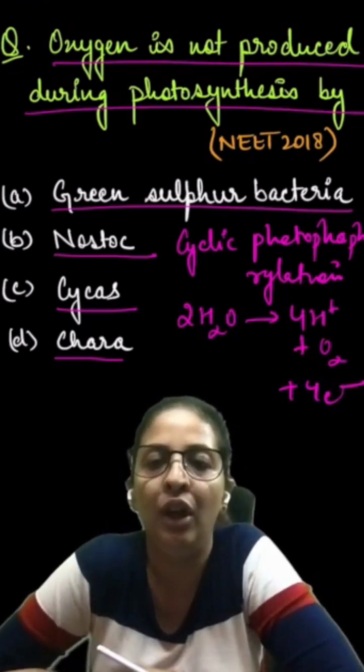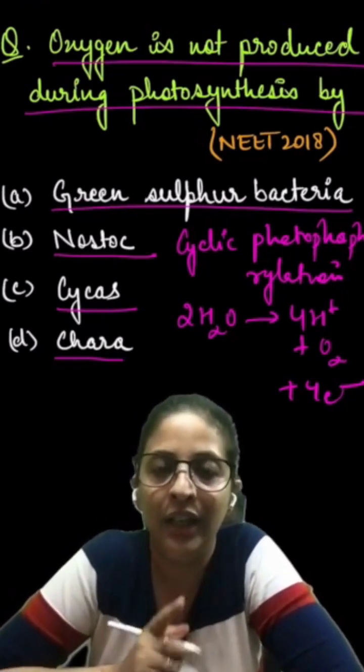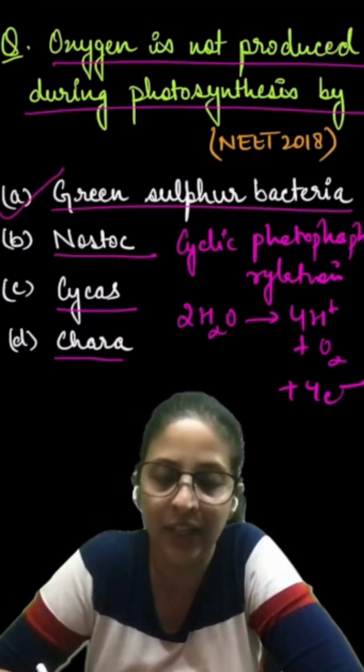So since this process is not happening in cyclic phosphorylation which happens in green Sulphur bacteria, here the correct option will be A. Green Sulphur bacteria.